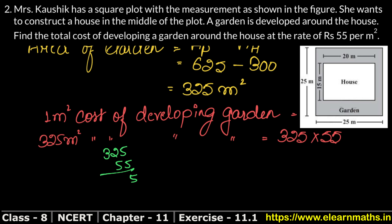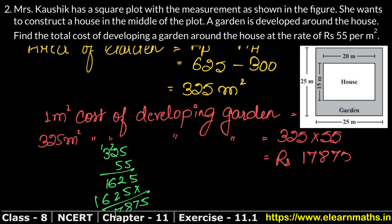Calculating 325 × 55: we get 17,875. So the total cost of developing a 325 square meter garden is 17,875 rupees. That is our answer.